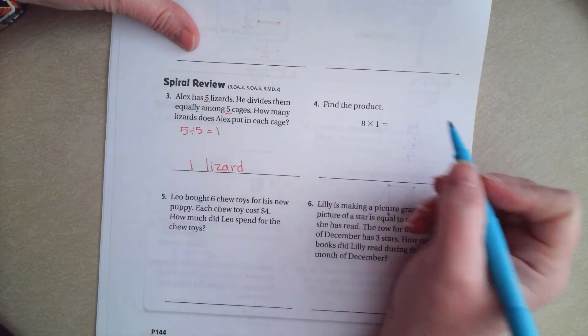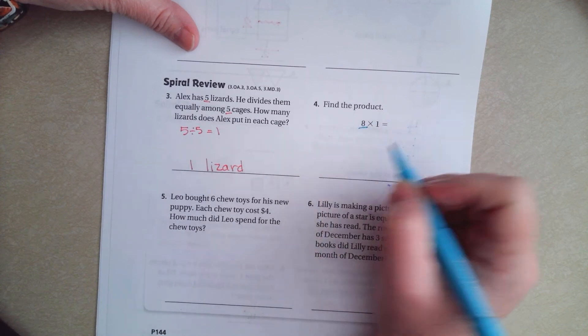Find the product. Eight times one. Any number times one is itself. Eight.